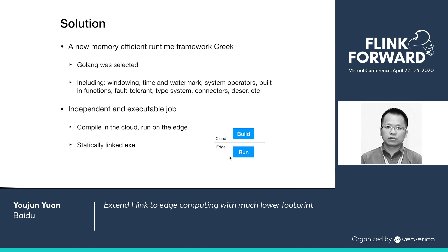To tackle those issues, we did the following two things. First, to address the memory issue, we implemented a new memory-efficient Flink runner framework. We call it Quick. Currently, JVM plays a big role in Flink's memory consumption, so we chose a different but more efficient language — GoLang. GoLang is much more efficient than JVM in terms of memory. Also, GoLang has good support for cross-platform compilation, and it has a mature ecosystem, so we don't need to do everything from scratch.